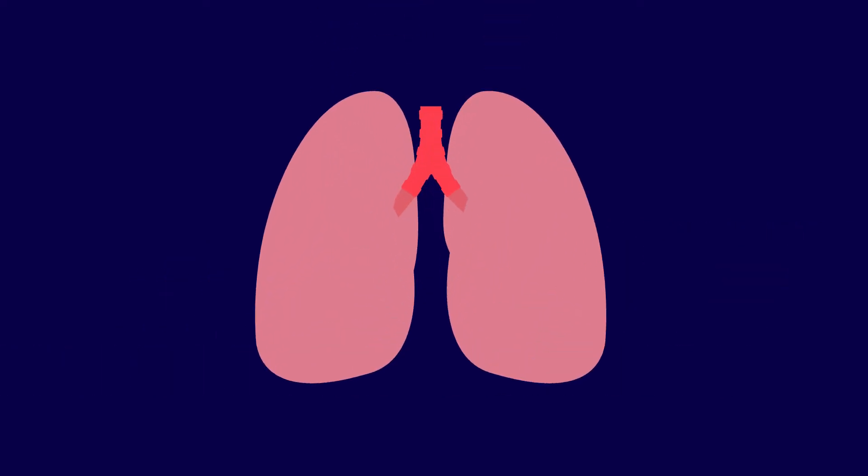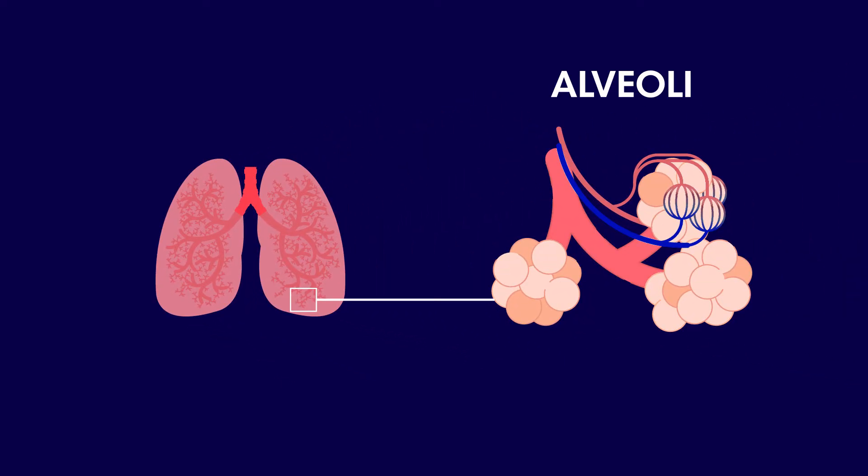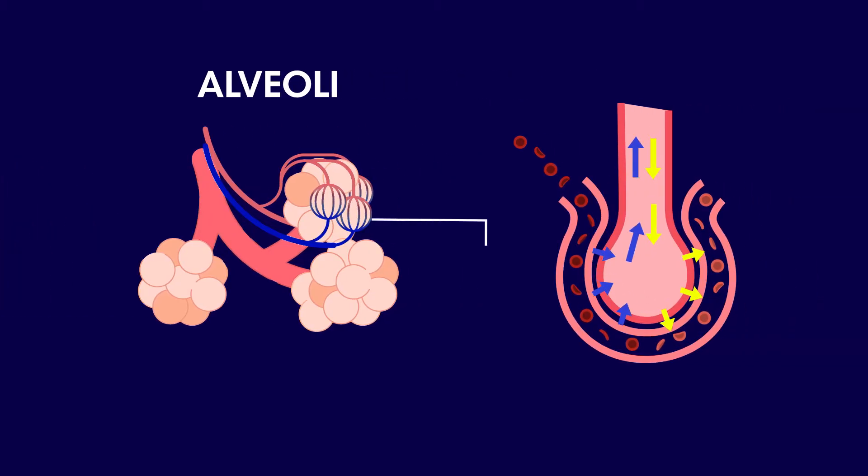For example, the lungs in mammals are highly branched with air sacs called alveoli on the end of each branch. This increases the surface area and helps to increase the amount of space available for diffusion at any given time.